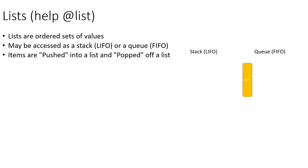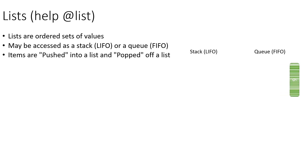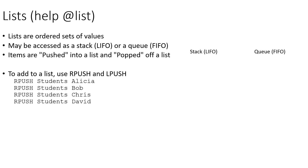A queue works in the other direction. We push one, two, three, four, and when we pop items we get the oldest first: one, then two. As we push new items like five and six to the front, popping still returns the oldest items. Neither approach is right or wrong — it just depends on how you want to manage items in the list.